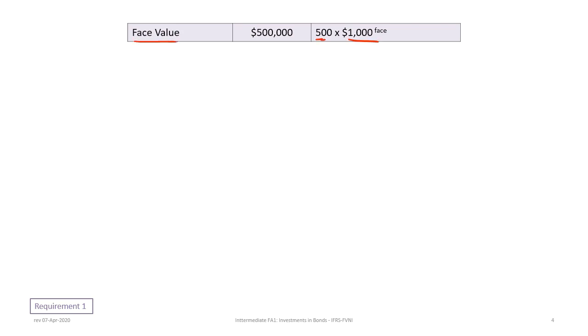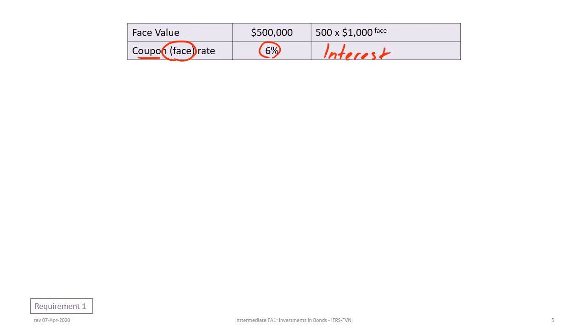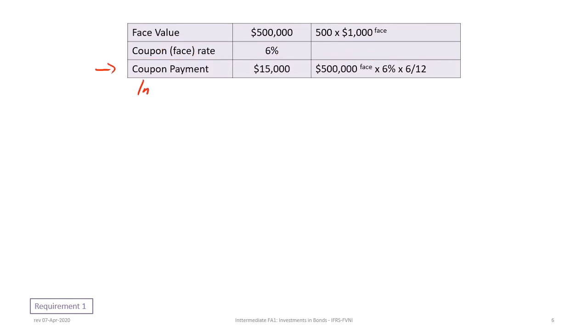We begin by identifying the face value of the bond. There are 500 bonds purchased at a face value of $1,000, so the total face value is $500,000. The face rate, or coupon rate, is 6%. To determine the semi-annual coupon payment, we take $500,000 times 6% times 6/12, which gives us $15,000. Alternatively, we can use 3% as the semi-annual coupon rate.